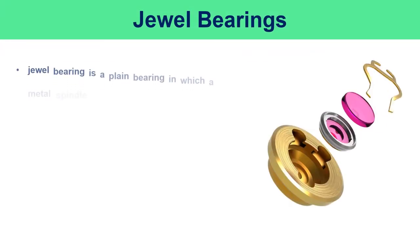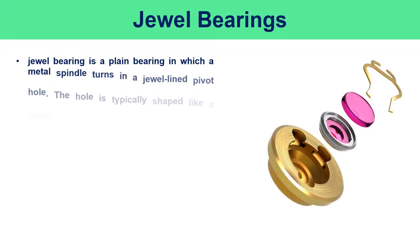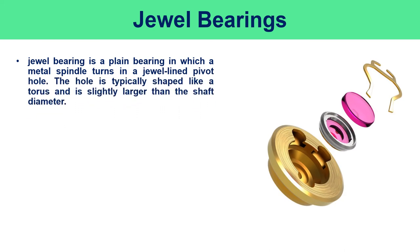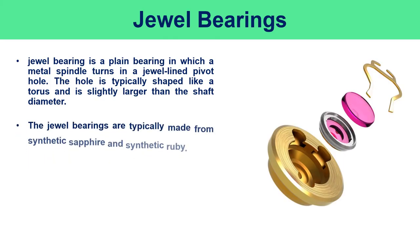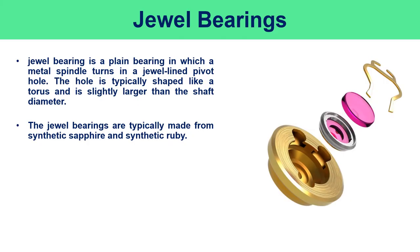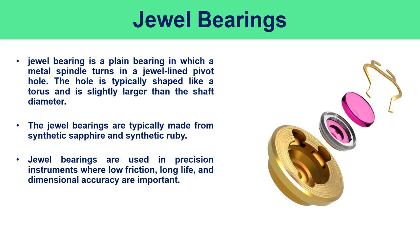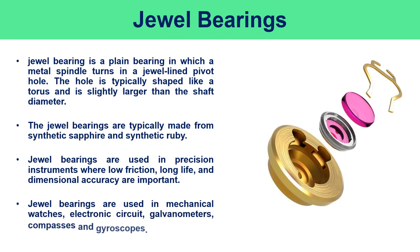A jewel bearing is a plain bearing in which a metal spindle turns in a jewel-lined pivot hole. The hole is typically shaped like a torus and is slightly larger than the shaft diameter. Jewel bearings are typically made from synthetic sapphire and synthetic ruby, and are used in precision instruments where low friction, long life, and dimensional accuracy are important. They are mostly used in galvanometers, electronic circuit compasses, and mechanical watches.